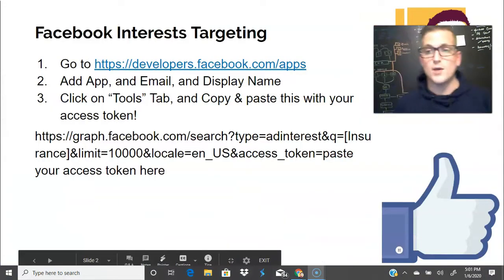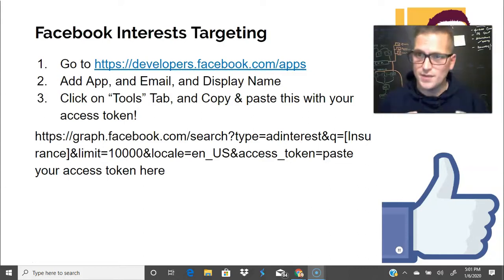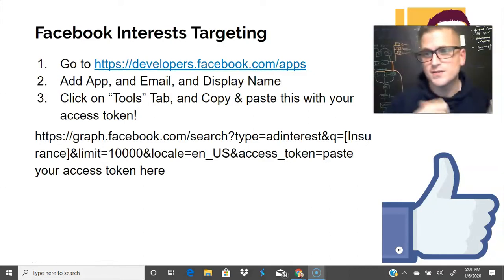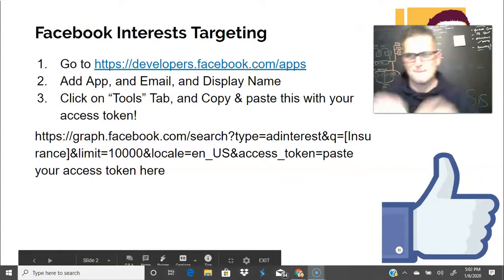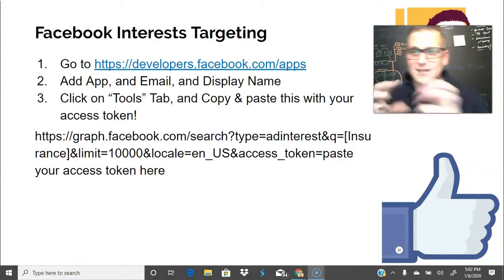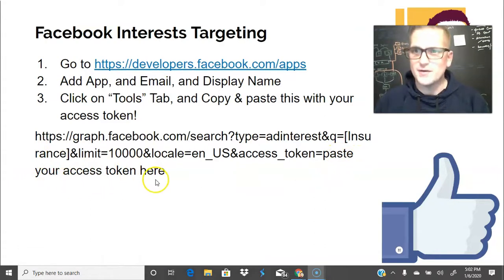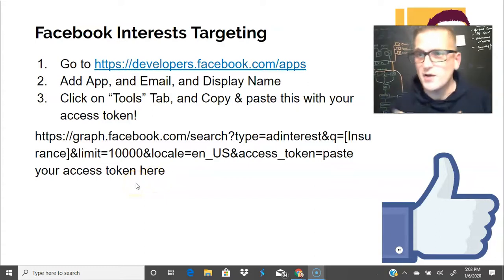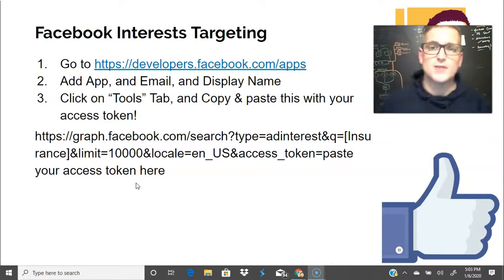All right, here we go. The first thing we need to do is access an API token. To do that, head over to developers.facebook.com/apps. After you've generated an API token, you're going to copy and paste this URL here, erase where it says 'paste your token here,' and paste your token there. I'm going to jump into my computer and show you exactly how this looks so you can replicate it yourself.